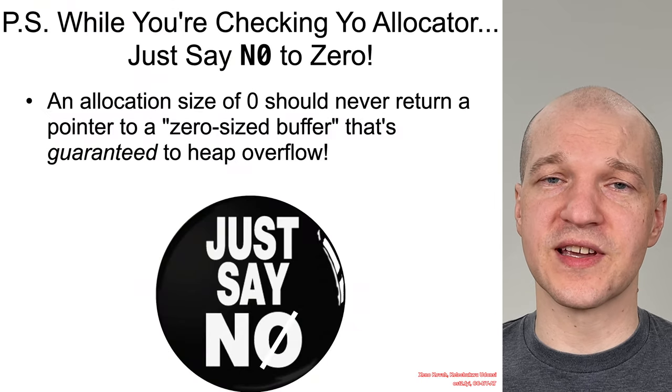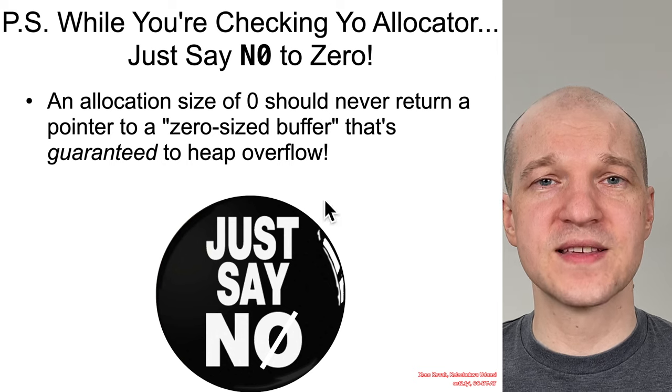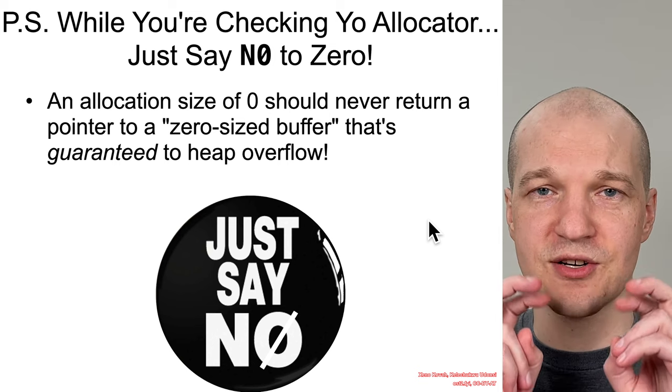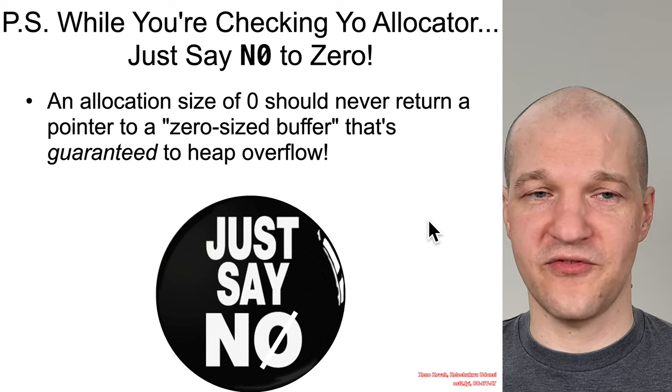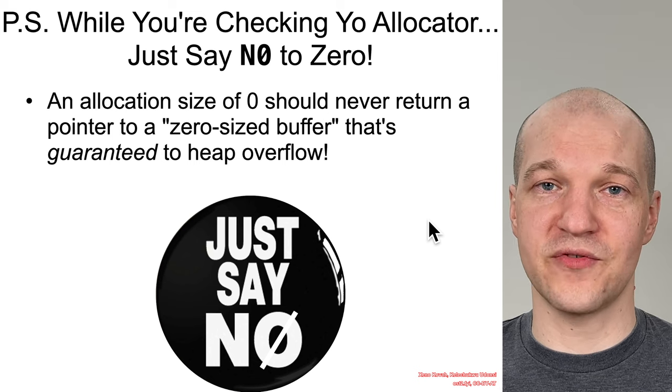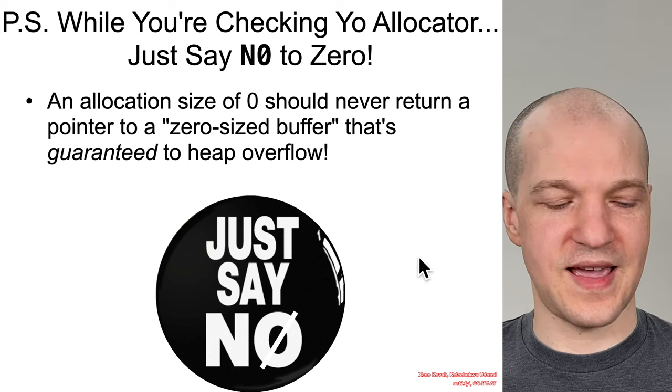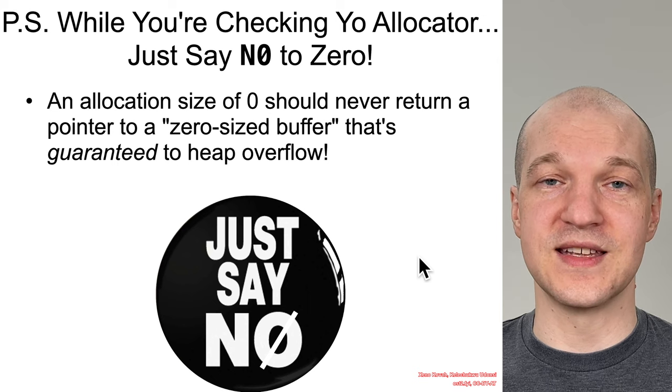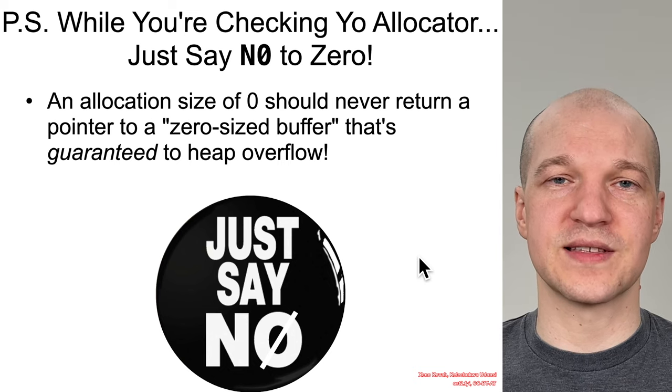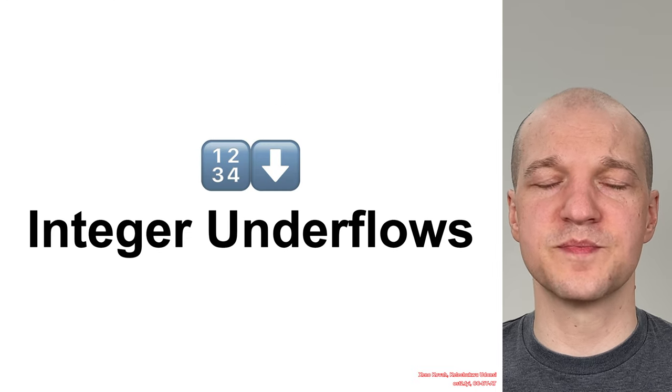And while we're on the topic of allocators, if you do go digging around in your allocator, I'd like to point out that you should just say no to zero. So when you have these integer overflows, it turns out that some allocators are just happy to allocate a zero-sized buffer. If an allocator hands you back a pointer to a zero-sized buffer, you are guaranteed to overflow that buffer, right? If you ever try to write any data into it. So when you're looking, go look for zero-sized allocations being an acceptable thing and disallow it because integer overflows could lead to a value of zero. And subsequently, this is going to guarantee buffer overflow. And here's the citations of that Microsoft work that'll be on the webpage.